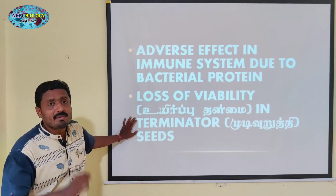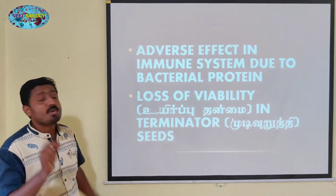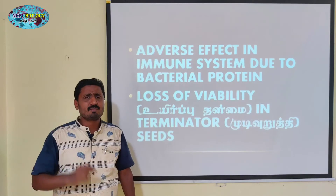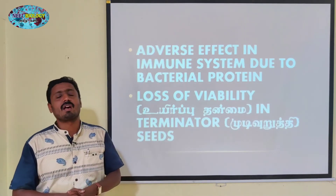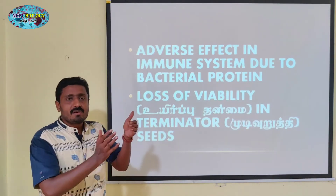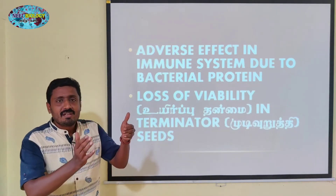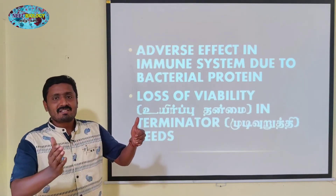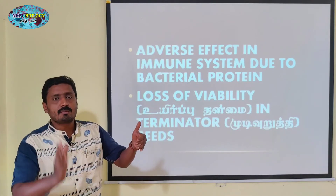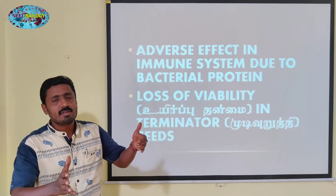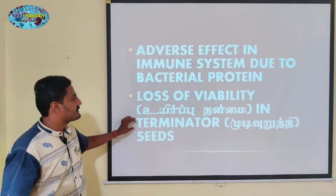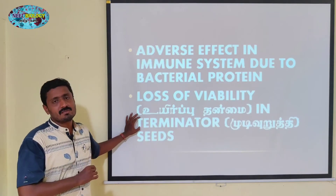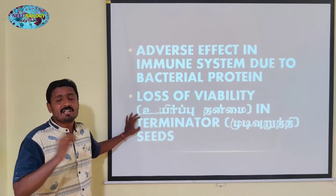Terminator — that is the third risk. First of all, one generation is complete. The second generation is terminated. Terminator varieties of seeds — they are in the same seed.